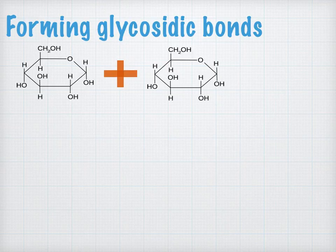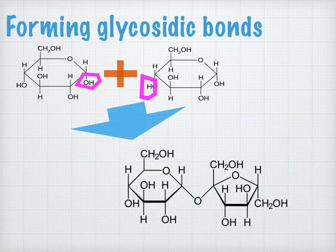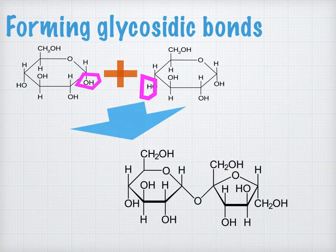In all disaccharides and larger carbohydrate molecules, the monosaccharides are joined together via glycosidic bonds. The two monosaccharides shown are both glucose, so we're forming a molecule of maltose. The atoms involved are two OH groups — one loses a hydrogen atom, the other loses an O and an H — forming a linkage through the oxygen atom. This releases a water molecule, making it a condensation reaction.